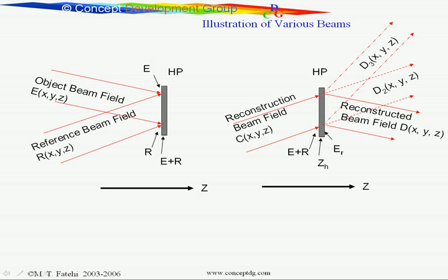We will have another reconstructed beam that would be traveling in the direct direction of the reconstruction beam, and finally, a third beam that has some kind of funny information about the original object, which we will describe shortly.